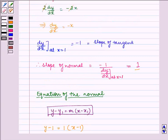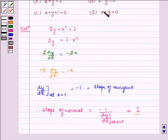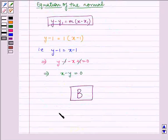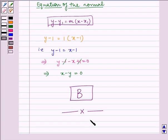Hence, x minus y equals 0 is the correct answer. Therefore, the required and correct option is B. This ends our session. I hope you understood the question. Bye and have a nice day.